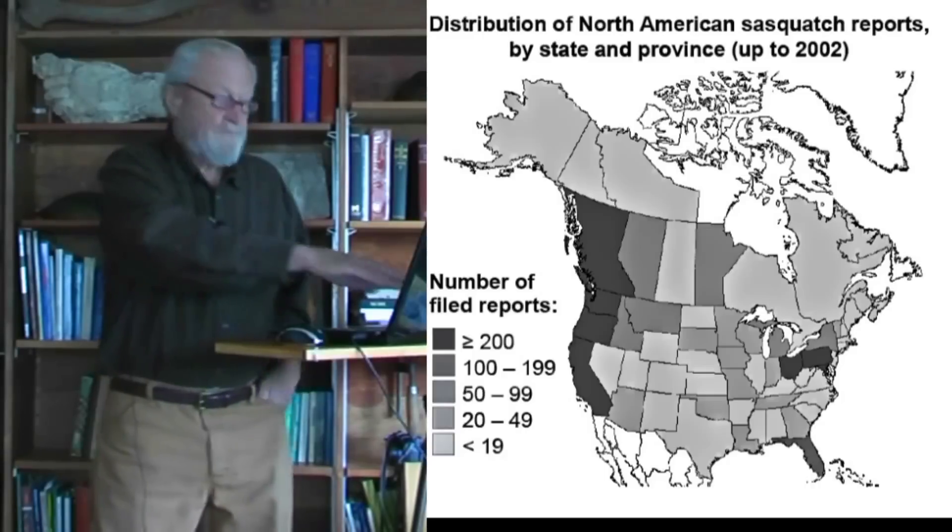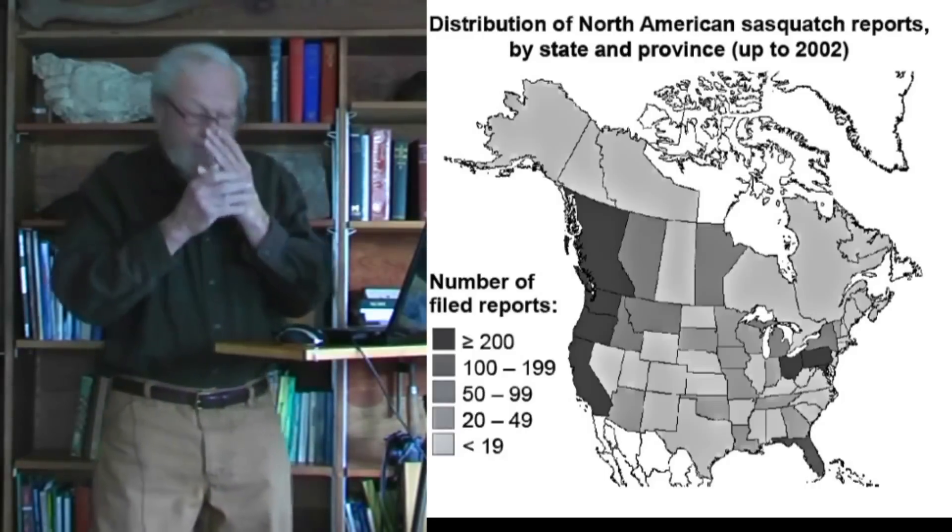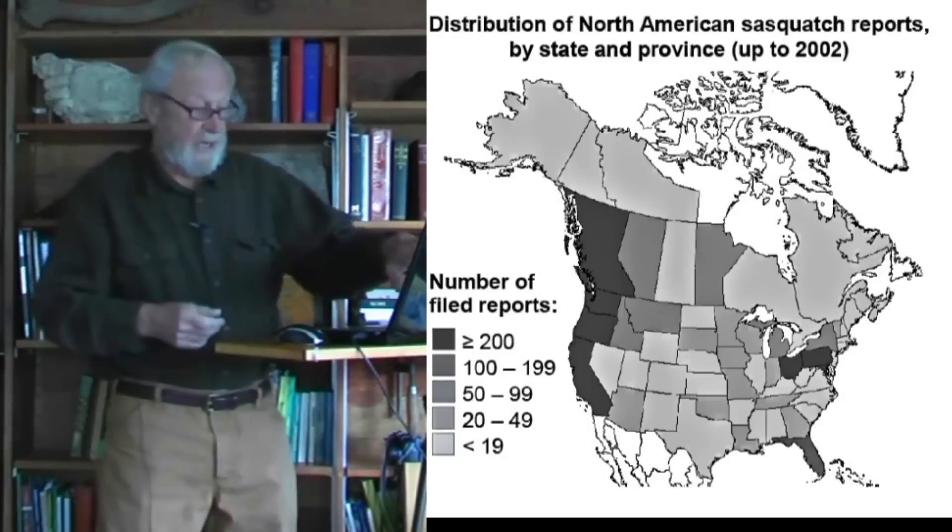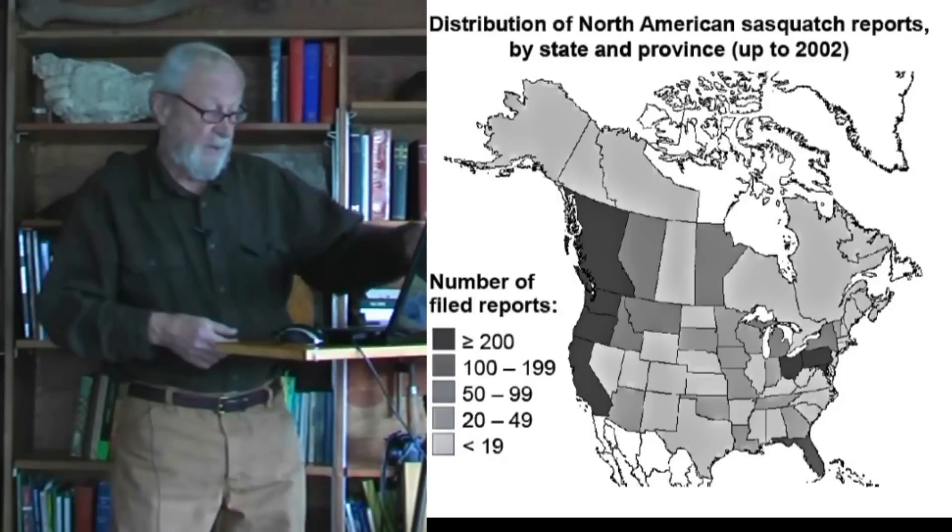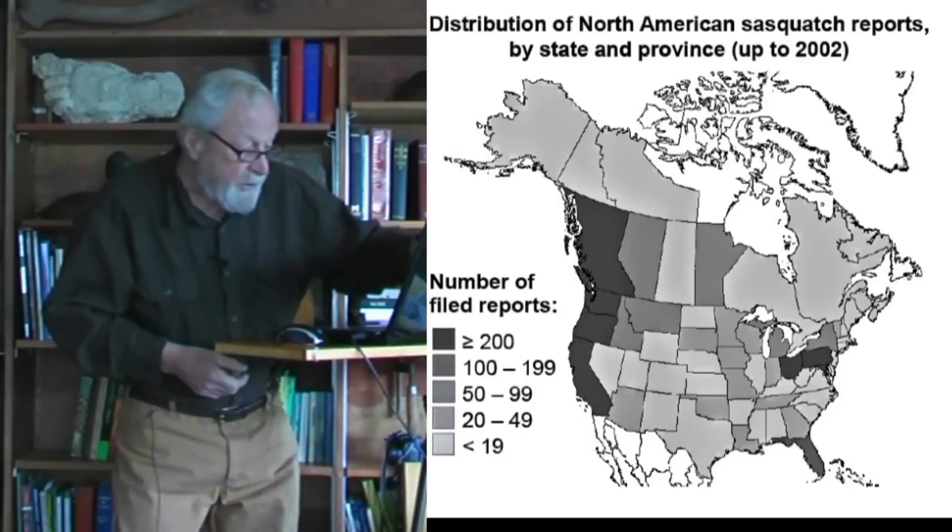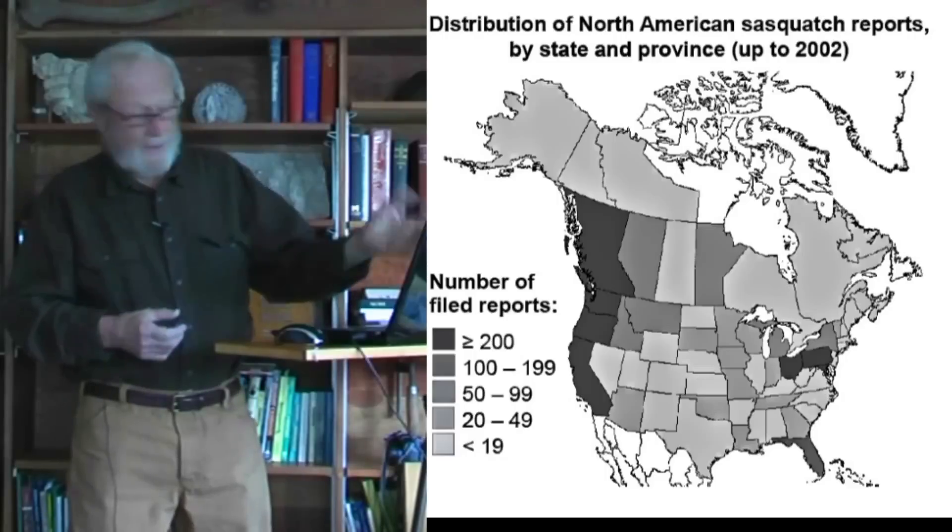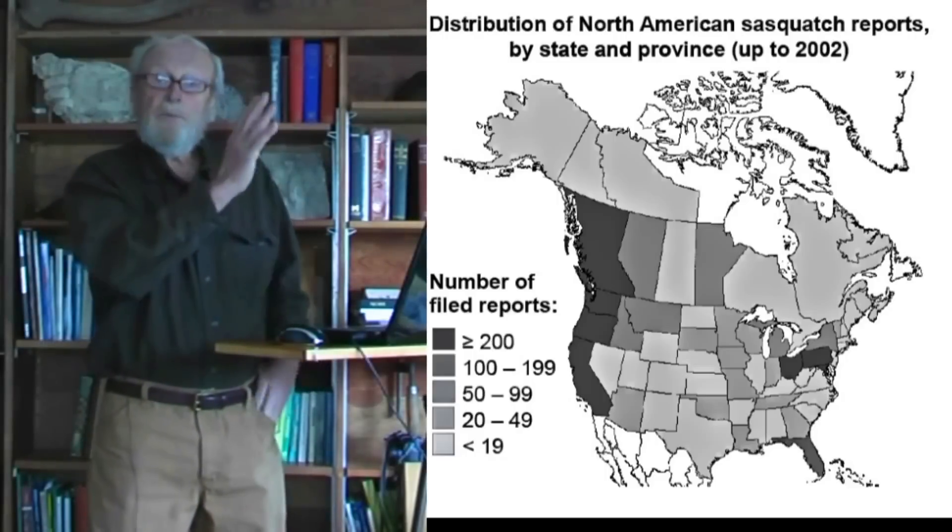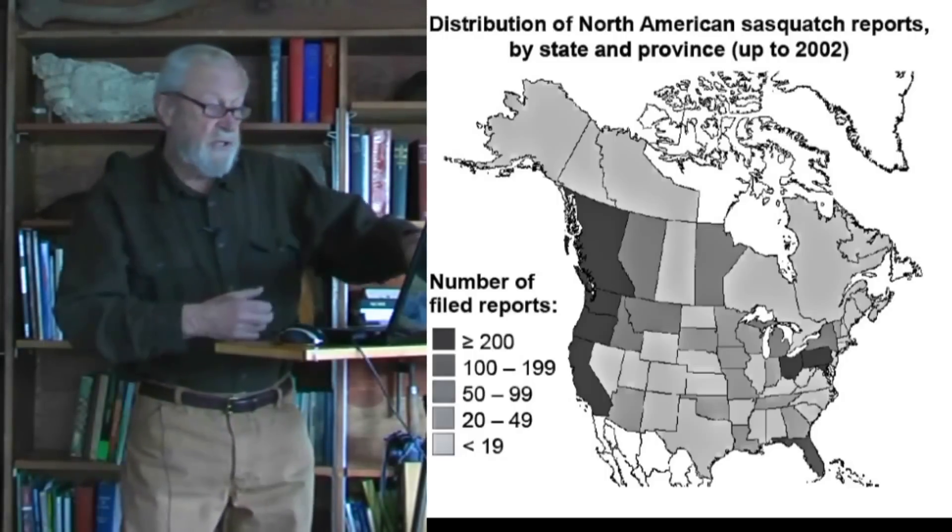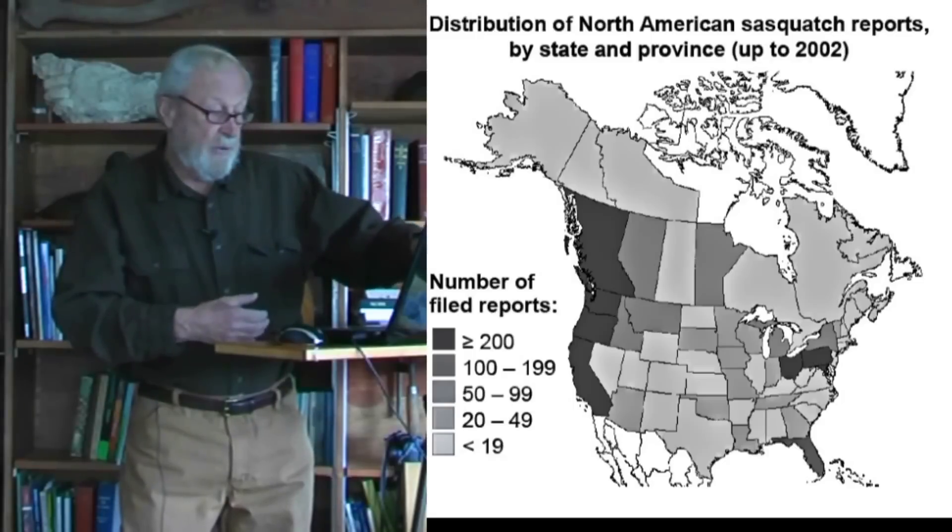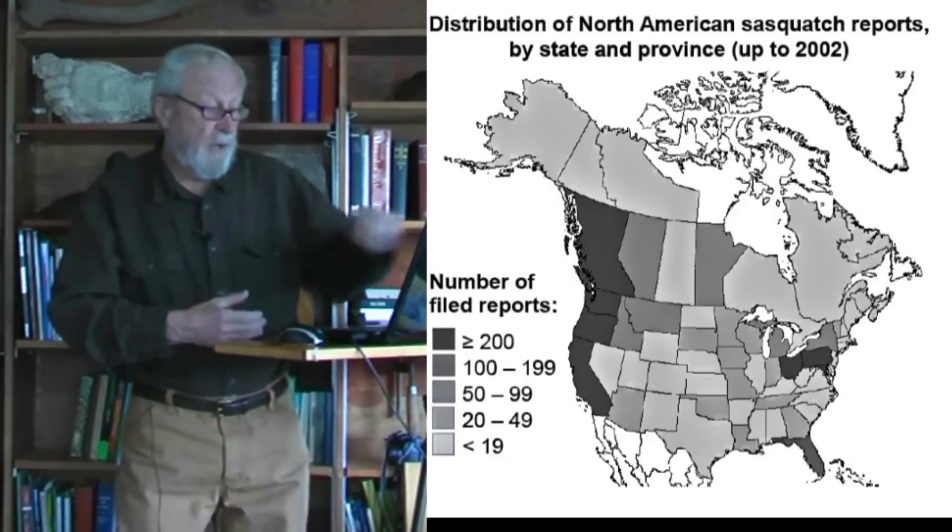As we can see, the states and provinces with the most sightings are indeed in western North America: British Columbia, Washington, Oregon, California, especially northern California, and then the provinces and states just interior to these, Alberta, Idaho, and Montana.